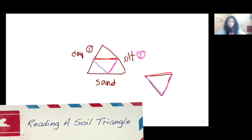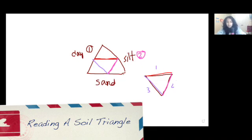Maybe draw this as a cheat for yourself: number one, two, three — clay, silt, sand — so you know exactly where to go. You first go this way, then you go this way, then you go this way.